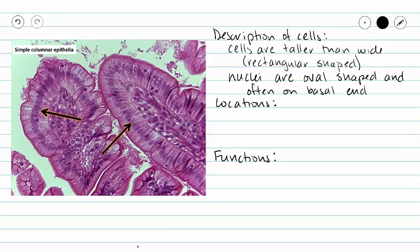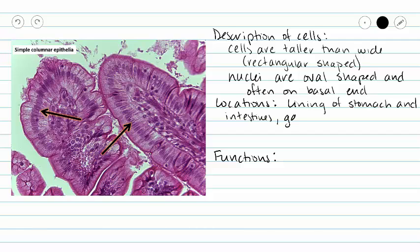Locations for simple columnar epithelia include the lining of our digestive system. We're looking at a picture of intestines, but we also see simple columnar epithelium on the inside of our stomach, our gallbladder, our uterus, and our uterine tubules.